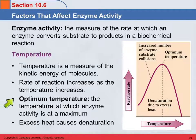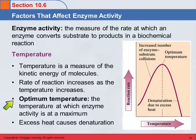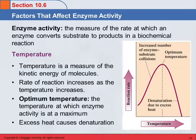When we refer to an optimum temperature, that's the temperature at which the enzyme activity is at a maximum. Usually these enzymes are designed to operate at a specific temperature. Your body regulates its internal temperature very closely — if your body temperature drops too low, you sink into hypothermia and can die, and if it goes too high, perhaps due to heat stroke, you can also die. Small changes in temperature can affect the enzyme activity significantly.